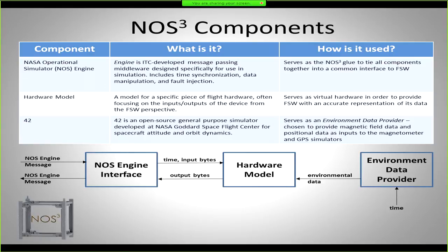For example, in 42 there's a model of the magnetic field around the Earth. We have a magnetometer hardware model, and that magnetometer hardware model is fed from the magnetic field model that 42 provides — that's why we refer to it as the environment data provider. We don't necessarily have to use 42; it's just one we had experience with and that's what we chose.